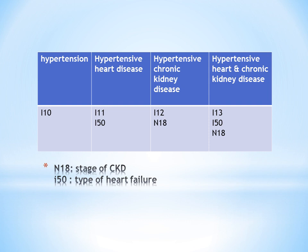The next condition is Hypertensive Chronic Kidney Disease, also a combination code: I12. With I12, we also code the stage of kidney disease using N18 — that is N18 stage 1, stage 2, stage 3, stage 4 — for CKD or chronic kidney disease.